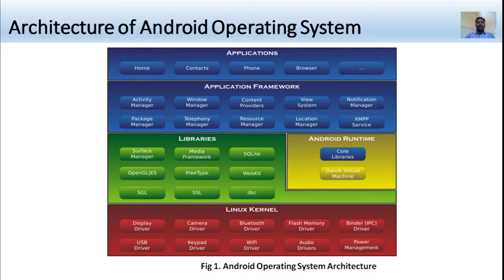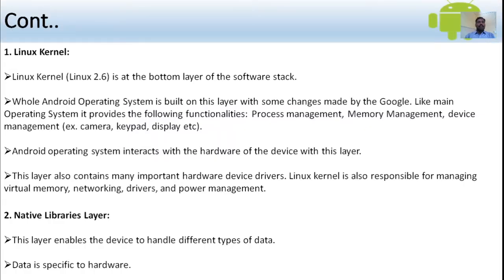The Linux kernel is the bottom layer of the Android software stack. The whole Android operating system is built on this layer with some changes made by Google. It provides functionality such as process management, memory management, and device management (camera, keypad, display). The Android operating system interacts with the hardware of the device from this layer and is also responsible for managing virtual memory, networking drivers, and power management.